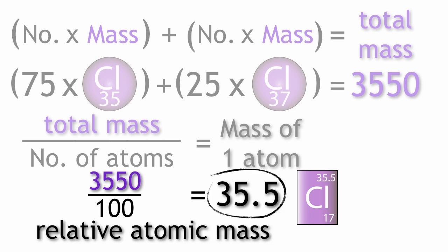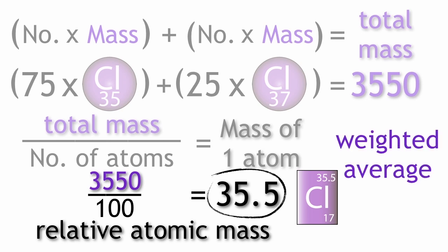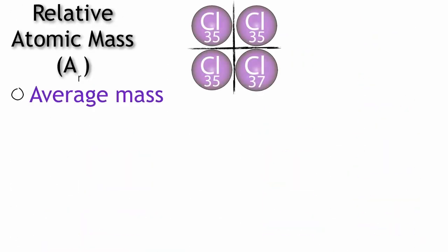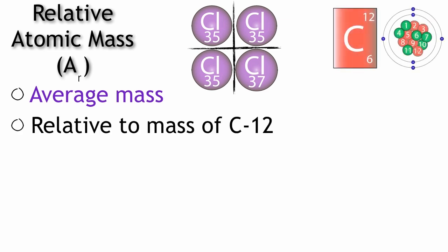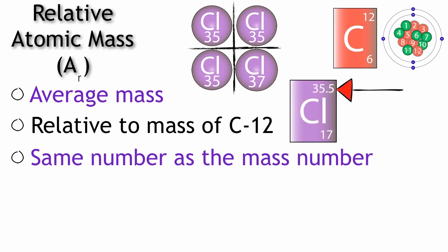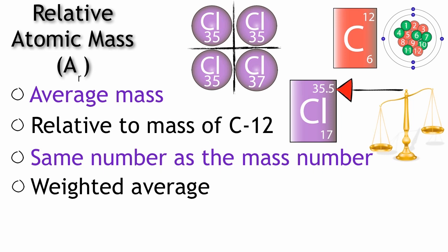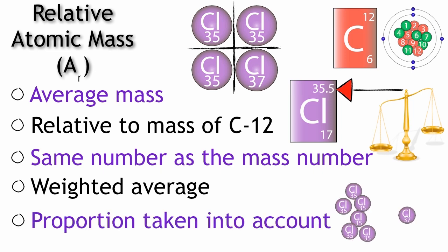The relative atomic mass has a value closer to 35 because there are more atoms of chlorine-35 than chlorine-37 — it is a weighted average. So the relative atomic mass of an element is defined as the average mass of the naturally occurring isotopes of the element relative to the mass of an atom of carbon-12. On the periodic table it is the same number as the mass number, and when calculating its value, the proportion of each isotope in the sample must be taken into account.